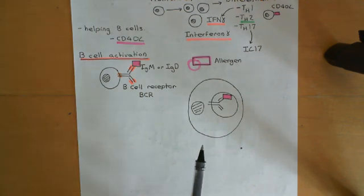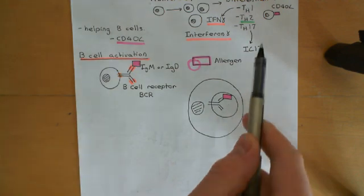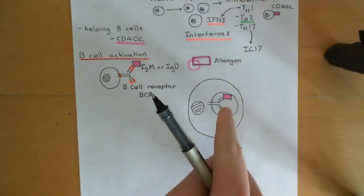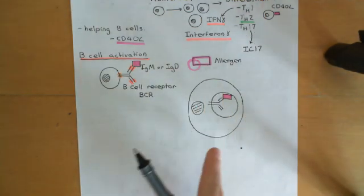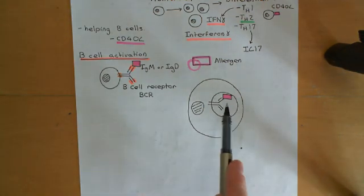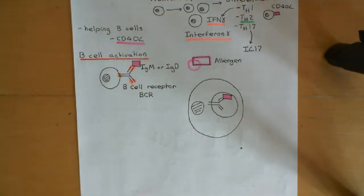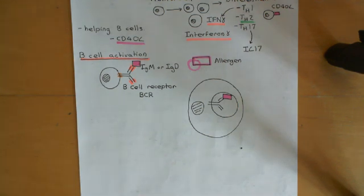It is only allowed to activate if there are also helper T-cells which are directed against this allergen. If there are not helper T-cells generated that are directed against this allergen, then you are not allowed to launch a B-cell response. The T-cell response comes first, and then you can activate a B-cell response only if you've got a T-cell response.